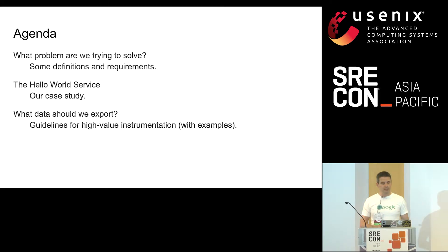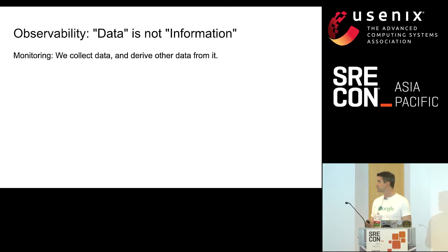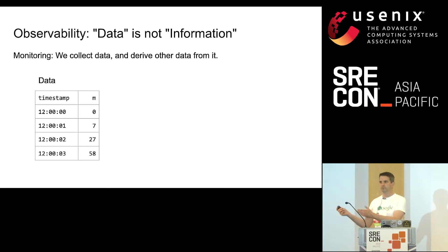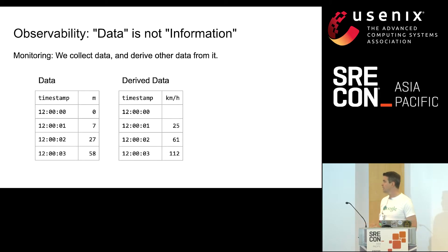First, definitions. The title of the talk is Instrumentation for Observability. The core point is that data is not the same thing as information. Our monitoring system allows us to collect data and then derive data from that. For example, we collect the position of a car at different timestamps — that is data our monitoring system directly collects. We then derive data from it: we take the rate, and that's the speed, so now we have the average speed over those intervals.